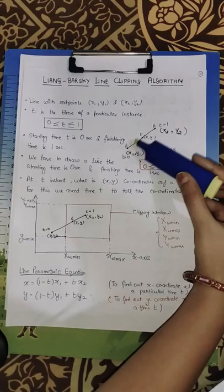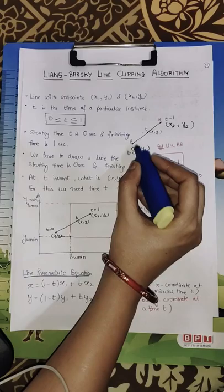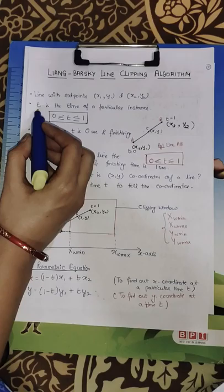Suppose there is a line AB with end points X1, Y1 and X2, Y2. Point A has coordinates X1, Y1 and point B has coordinates X2, Y2.